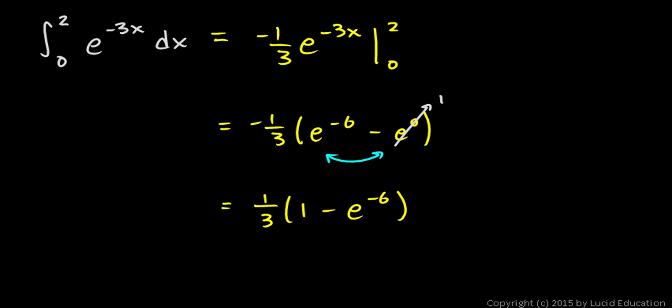And if you wanted to, you could distribute the 1 third, it would be 1 third minus e to the negative 6 over 3. And either of these would be correct ways to write the answer, but on a multiple choice question, it could show up either way. So you should be able to move from one to the other pretty quickly, either on paper or even mentally.